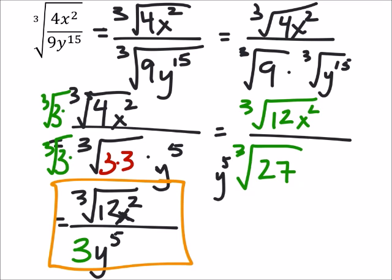Now usually we would want to check and make sure that there's nothing we could pull out of this 12. We already know there's not enough x's to pull out of the radical, but 12 is 2 times 2 times 3, so there's no triples in 12 to pull anything out and factor out.